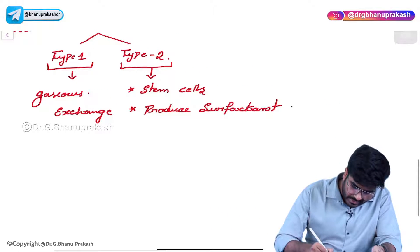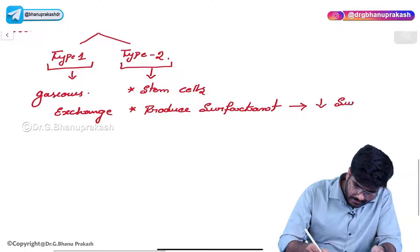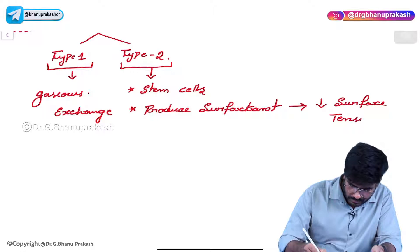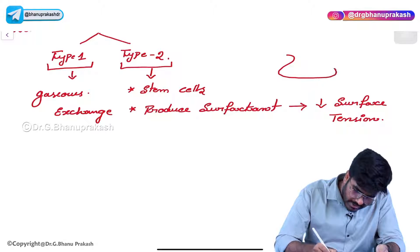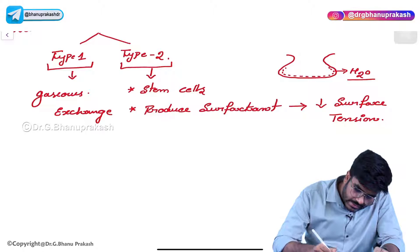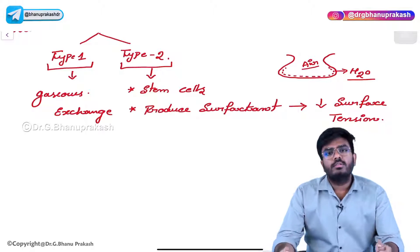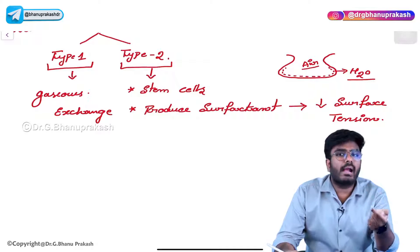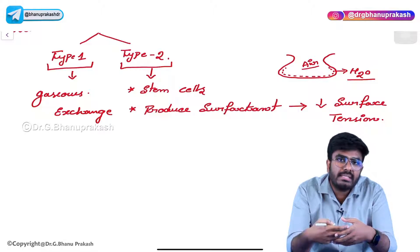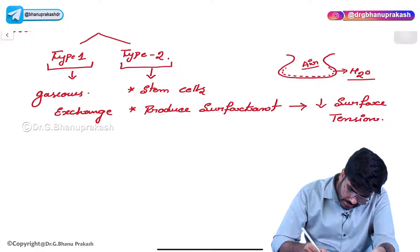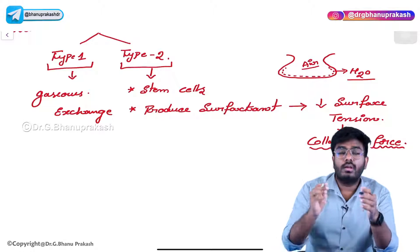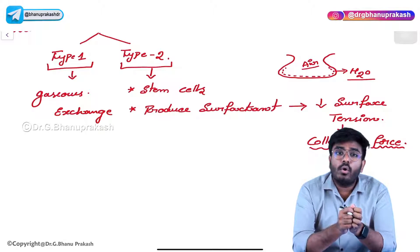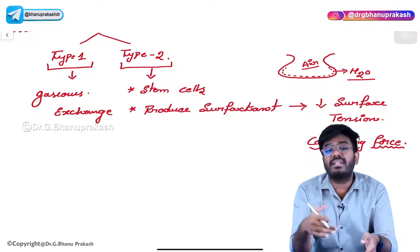Surfactant decreases surface tension. In the alveoli, there is an air-water interface. Wherever there is air and water, a force called surface tension develops. Surface tension is a collapsing force, and it is present inside the lungs. The lungs do not collapse in healthy individuals because of the presence of surfactant.